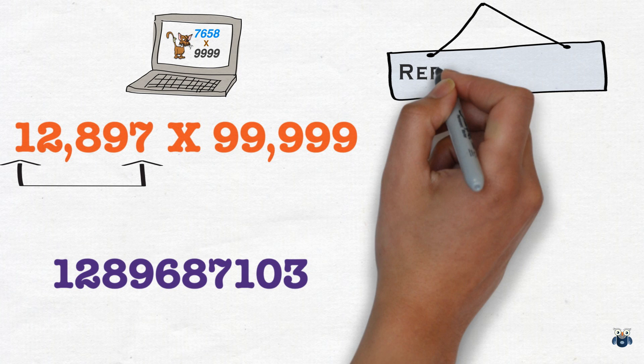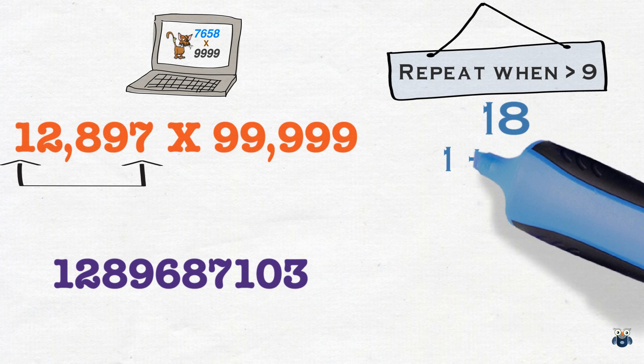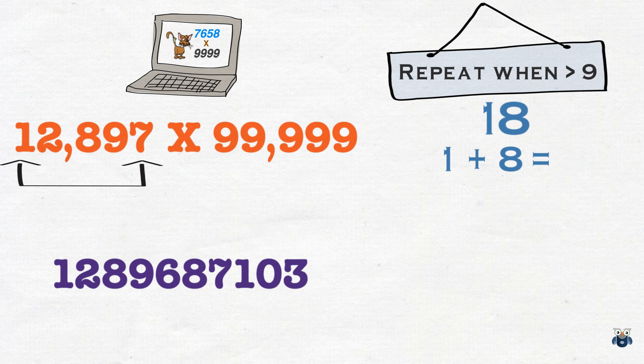Now, here, the other thing to remember. When your result is more than 9, you've got to add the digits again. So, we have 1 plus 8, which is 9. And since we ignore 9, we use 0 instead.